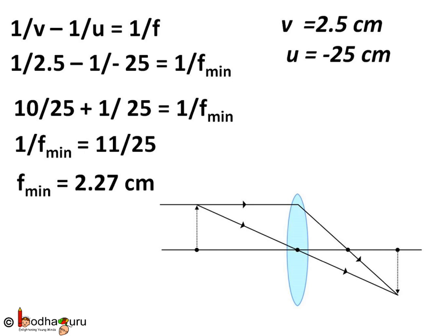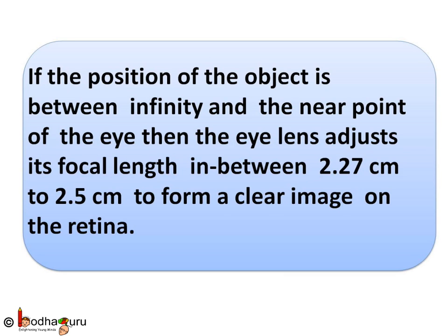So the minimum focal length of eye lens is 2.27 cm. This means the focal length of our eye lens stays between 2.27 and 2.5 cm. When the object position is between infinity and the near point of 25 cm, the eye lens adjusts its focal length within this range to form a clear image on the retina.